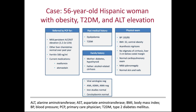I'm going to start with a case. It's a 56-year-old Hispanic woman who has a long history of obesity, type 2 diabetes mellitus, and alanine aminotransferase elevation — not very high, about 1.2 to 2 times the upper limit of normal. Other liver chemistries are unremarkable. Ferritin is a bit elevated at 500.